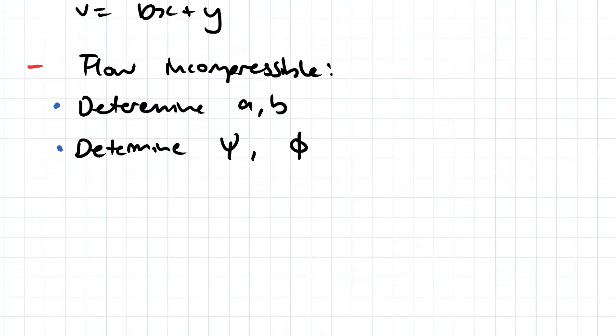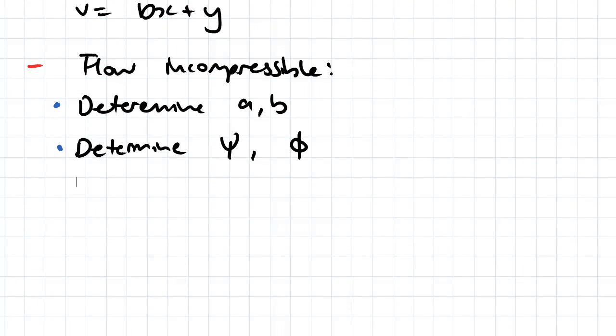So the first thing, because we're dealing with a steady incompressible flow, we know from our continuity equation that the product between our gradient vector and our velocity vector is equal to zero.